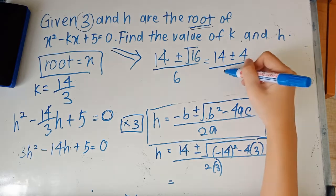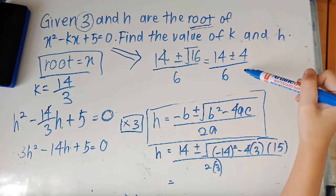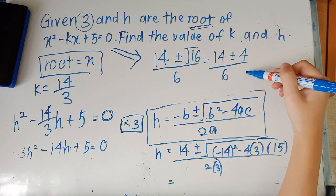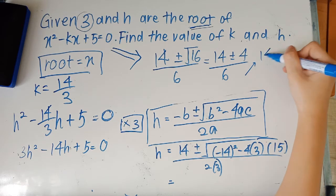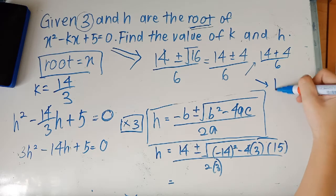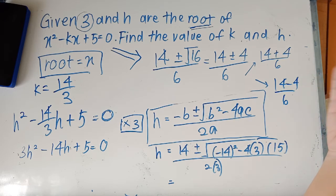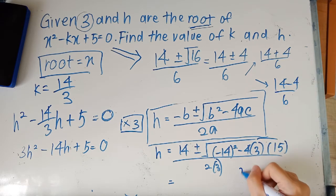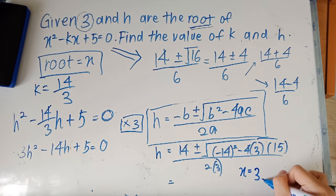And over 6. Since square root 16 is 4, you just write that plus minus 4 over 6. So from here you would separate it into two equations: one is 14 + 4 over 6, the other one is 14 - 4 over 6. And from here you have two different answers: your x will be 3 and the other x will be 5/3.